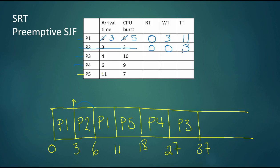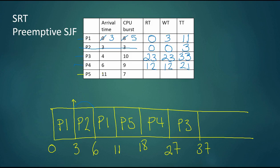P3 arrived at time four and did not get the CPU until time 27, so P3's response time is 23. Turnaround time is 33 and wait time is 23. P4 arrived at time six, first got the CPU at time 18, giving a response time of 12. P4 finished at 27, arrived at six, so turnaround time is 21, waiting a total of 12 time units. P5 arrived at time 11, first got the CPU at time 11, did not wait at all, and was active for its full seven-unit CPU burst.